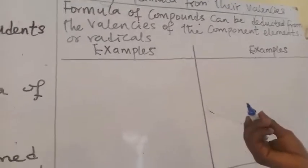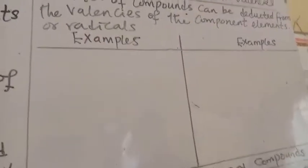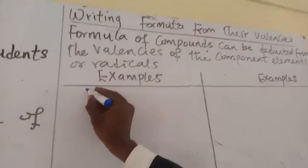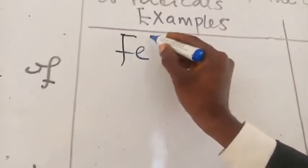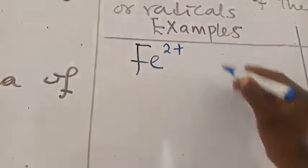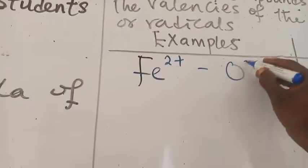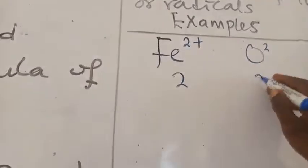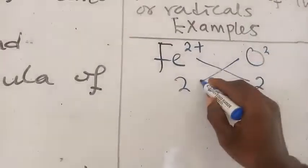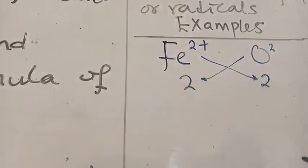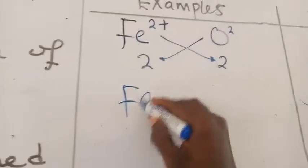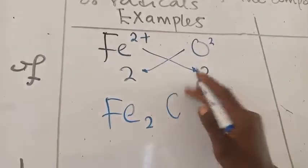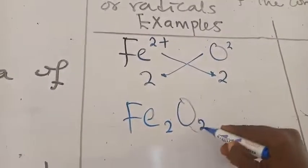For example, let's say we want to write the compound iron-2 oxide. Iron-2 oxide is Fe2+ and there you have O2-. What do you do? These are their combining power. This is 2 and this is 2. So you do what we call an exchange of radicals. The iron collects these 2 and the oxygen collects these 2.